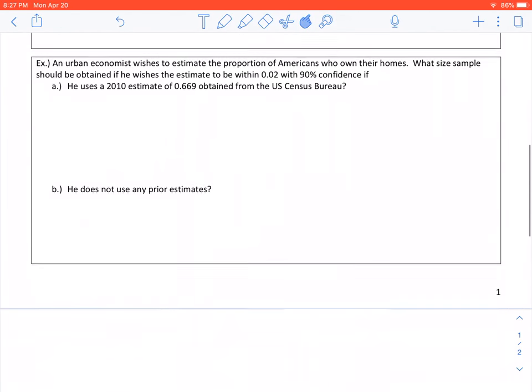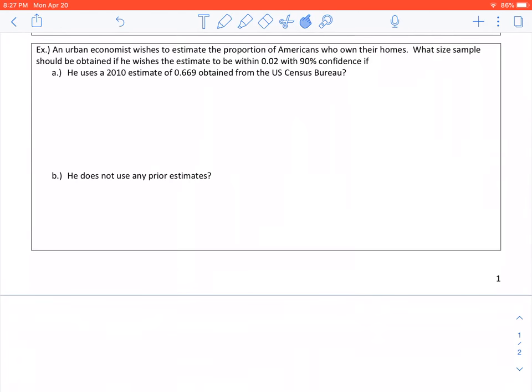The next example says an urban economist wishes to estimate the proportion of Americans who own their homes. What size sample should be obtained if he wishes to estimate the estimate to be within 0.02 with 90% confidence? So he says, what is the size of the sample? That means that we are looking for N. You have a total of three equations in chapter 7 that talk about finding the sample size. This one is talking about the proportion, so we are dealing with P.